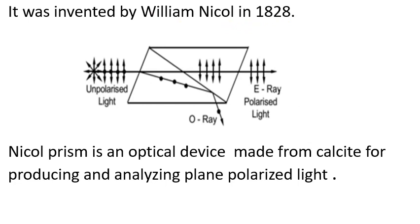It was invented by William Nicol in 1828. Nicol prism is an optical device made from calcite for producing and analyzing plane polarized light.